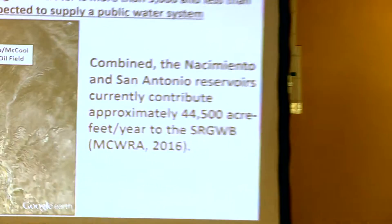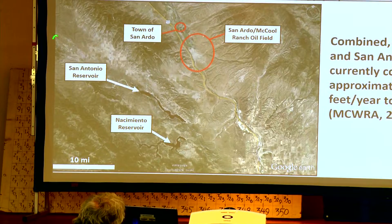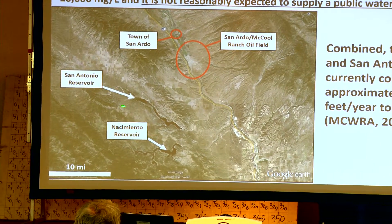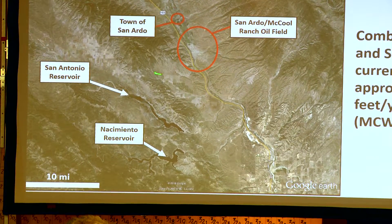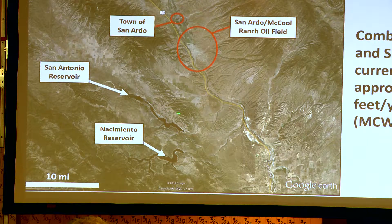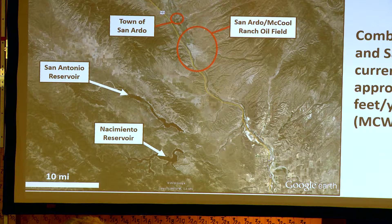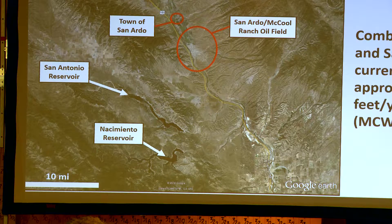Where is the groundwater coming from that feeds those water wells? As many of you know, there's the Nacimiento and the San Antonio Reservoirs that help feed the Salinas River Valley. Currently, according to data from the Monterey County Water Resources Agency, those reservoirs contribute over 44,000 acre-feet per year to the valley — that's a little over 300,000 gallons per acre-foot, a substantial amount of water being introduced to the valley, all going into that shallow Paso Robles formation.